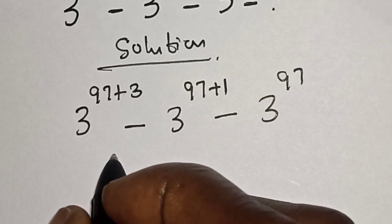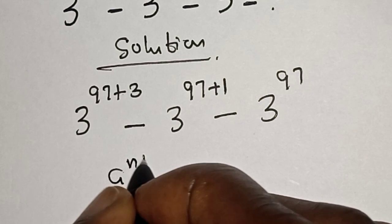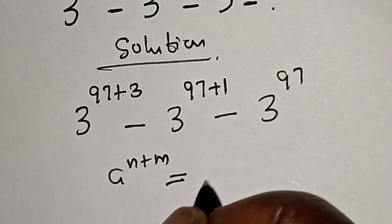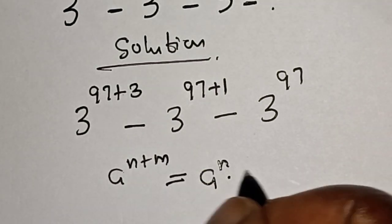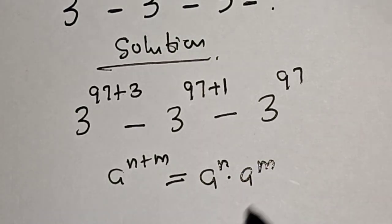Remember this rule: A raised to power N plus M is equal to A raised to power N multiplied by A raised to power M.